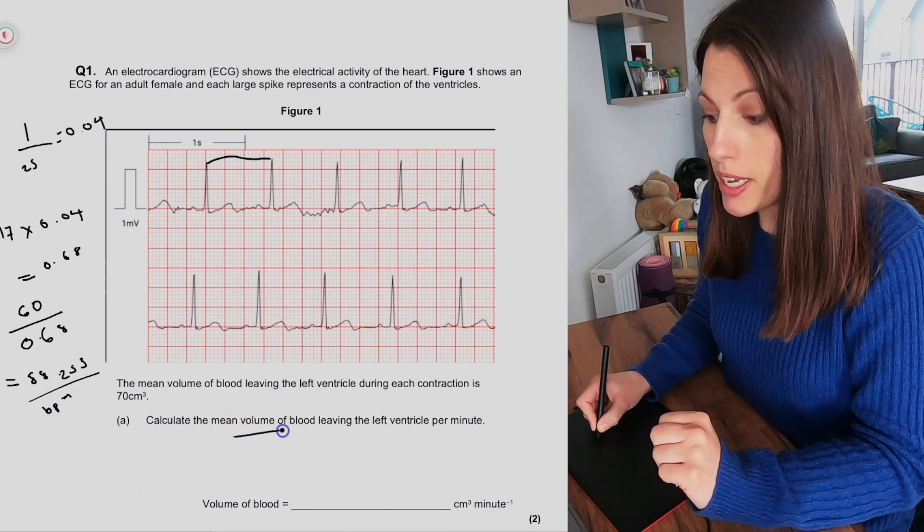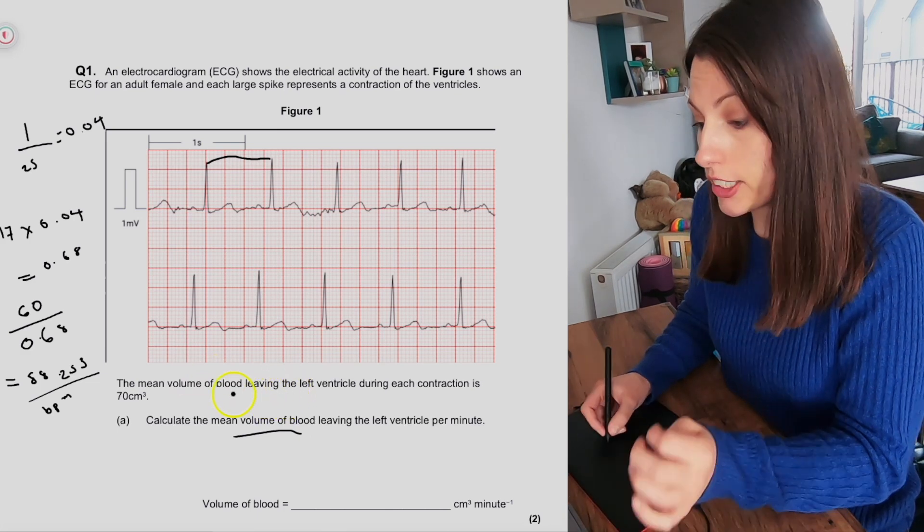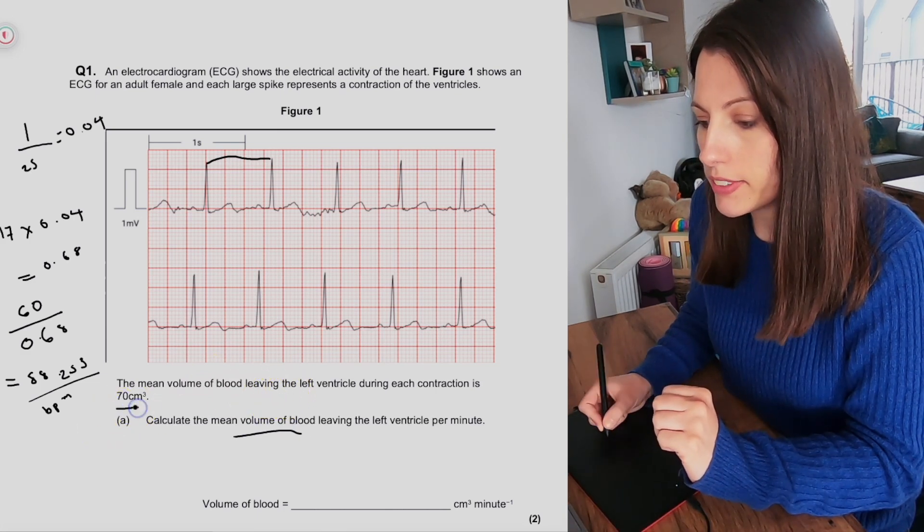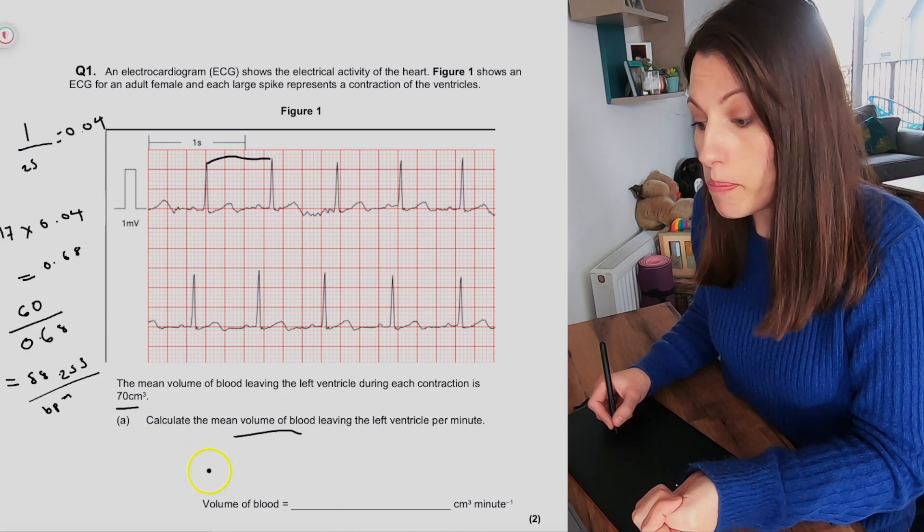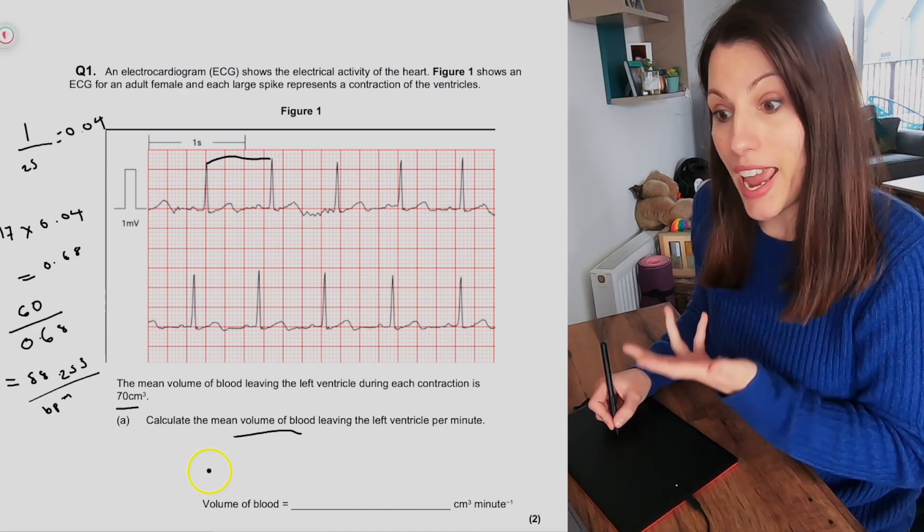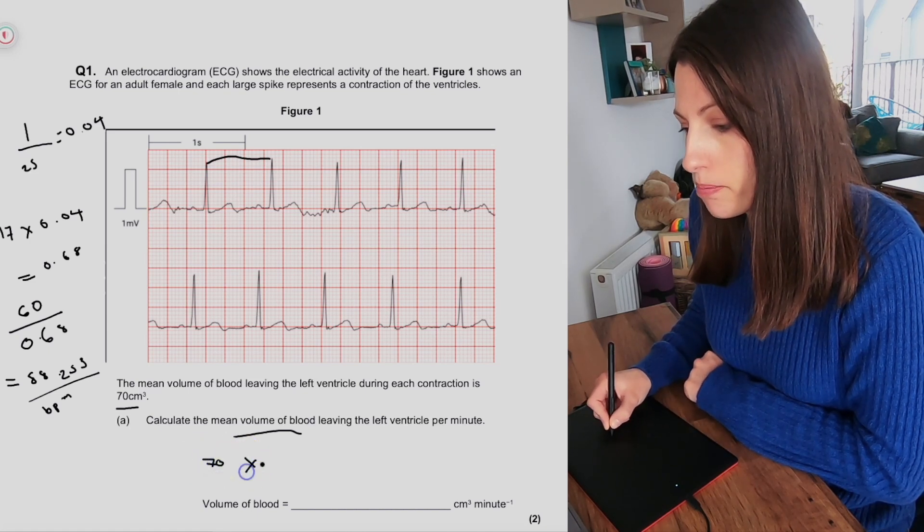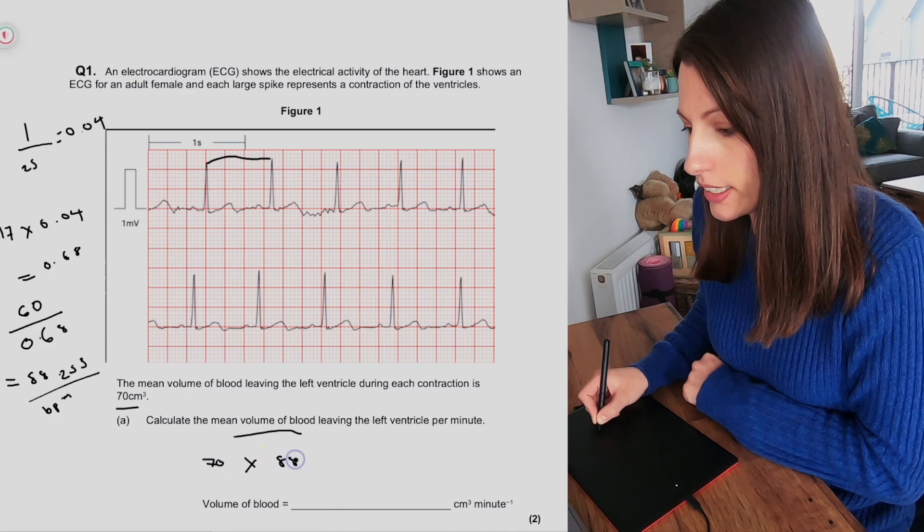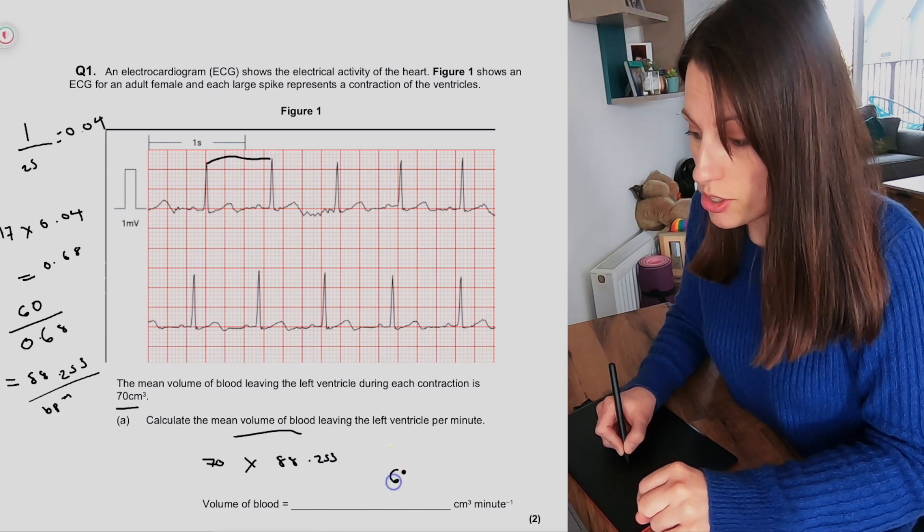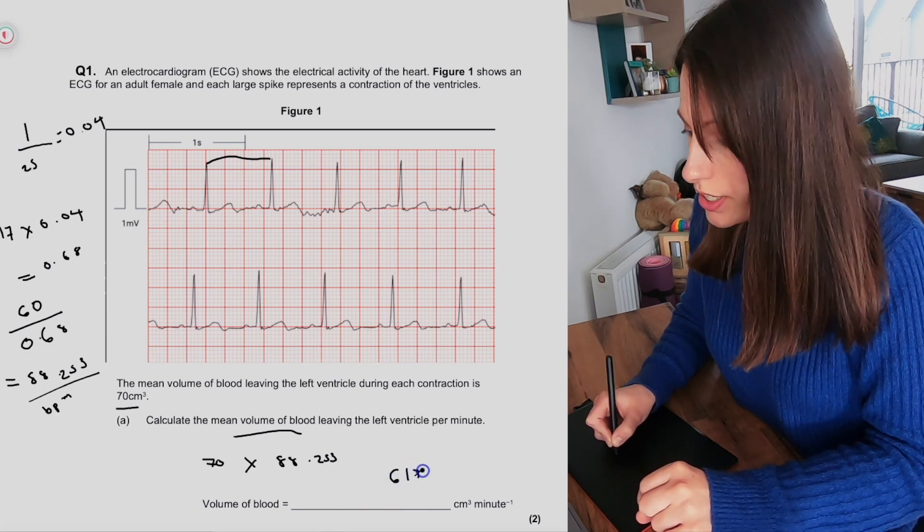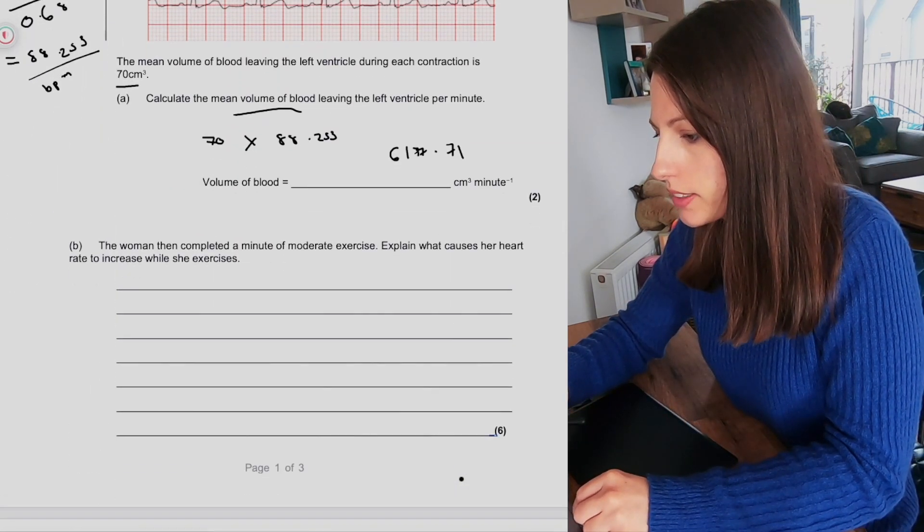And to calculate the mean volume of blood leaving the heart or leaving the left ventricle during each contraction is 70 centimeters cubed in this example. So if we want to know how many is going to leave in one minute and we know that we're going to have 88.253 beats in a minute, we would do 70 multiplied by 88.253. So in total that then comes to 6,177.71. So that is our first maths question.